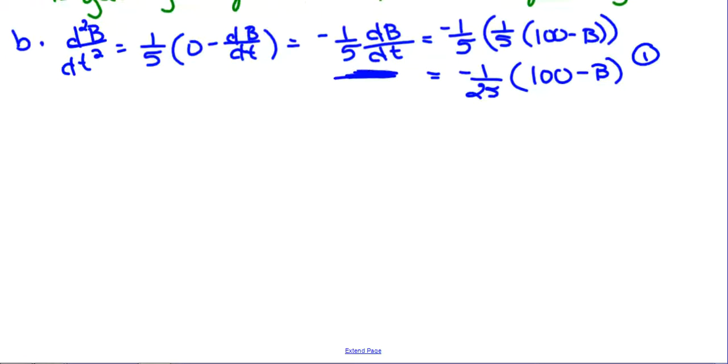Okay. So I was trying to glance at the rubric as I was doing that. So you get, oh, but it says in terms of B. So we didn't really finish that. That's in terms of dB/dt. So we've got to substitute. Negative one-fifth times one-fifth times 100 minus B. That's just dB/dt.